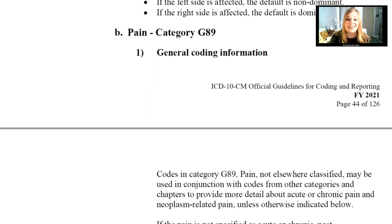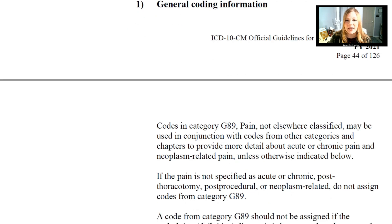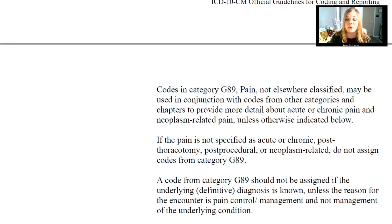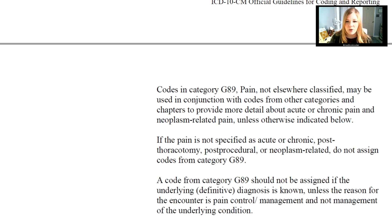Category G89 is the category for pain. Codes in category G89, pain not elsewhere classified, may be used in conjunction with codes from other categories and chapters to provide more detail about acute or chronic pain and neoplasm-related pain, unless otherwise indicated. If the pain is not specified as acute or chronic, post-thoracotomy, post-procedural, or neoplasm-related, do not assign a code from category G89.